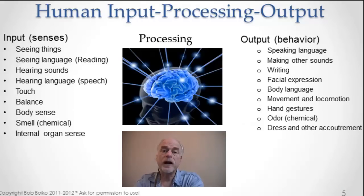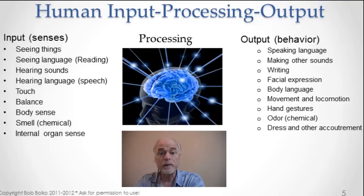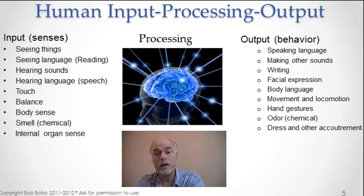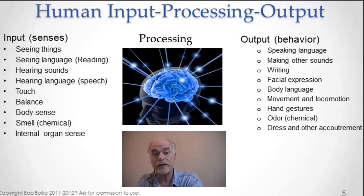You can use that same idea of input, processing, and output to talk about how people work. The analogy isn't perfect, but it's pretty good, and it'll give us a really good framework for looking at all of these VR and cyber systems. People have input, people have processing, and people have output as well. Input at the very largest level is your senses. Output is your behavior — you take things in through your eyes and ears, it gets processed by your brain, and then you behave. That's you working back on the world. The world working on you is your input; then you make sense of that inside your brain and behave accordingly.